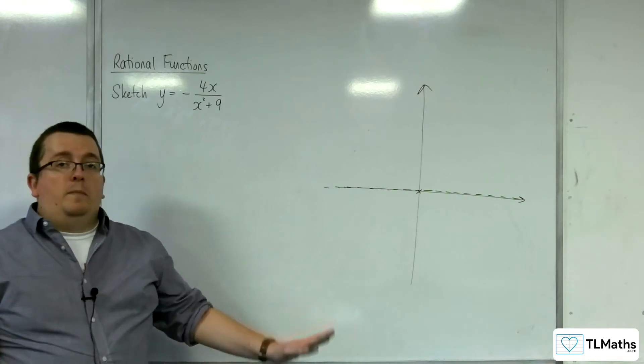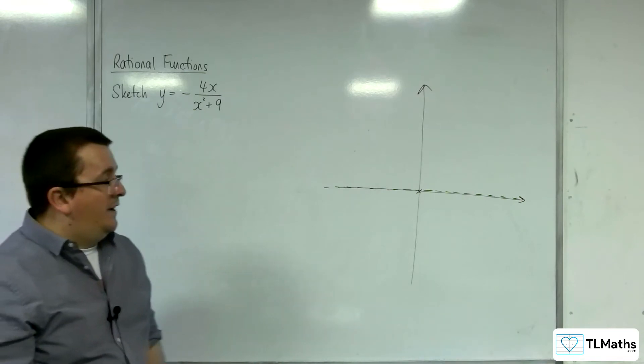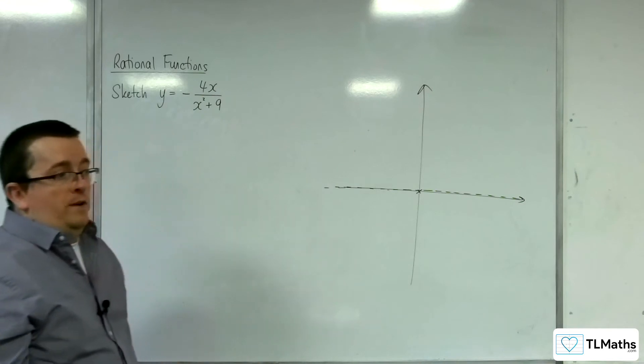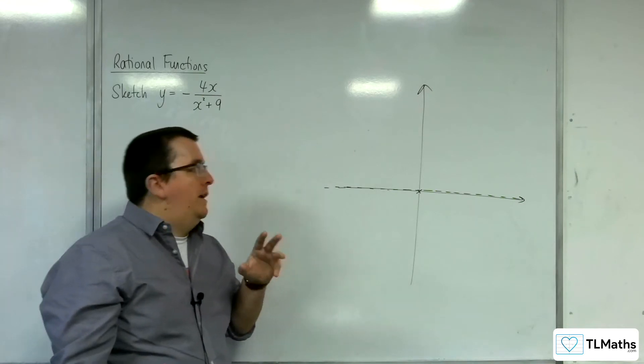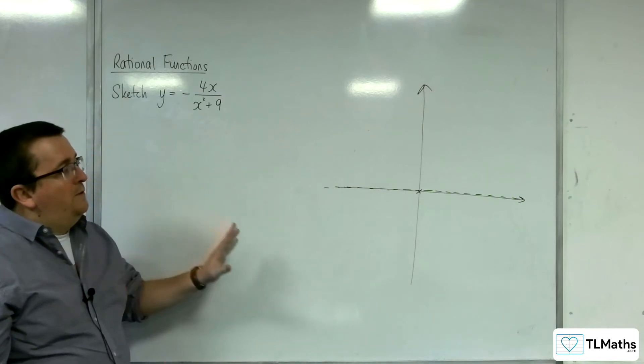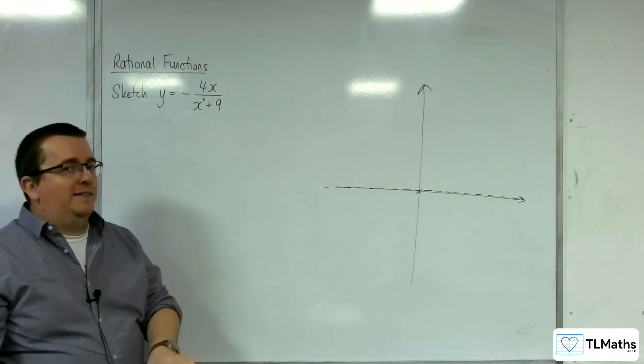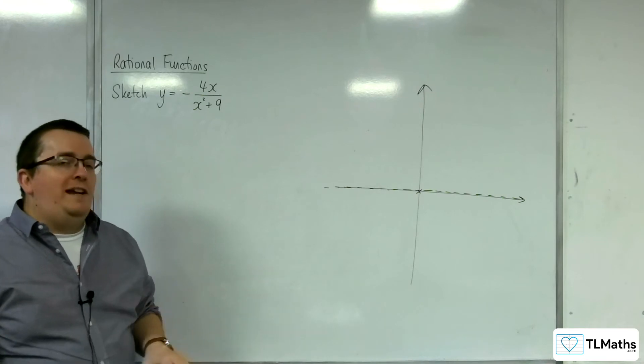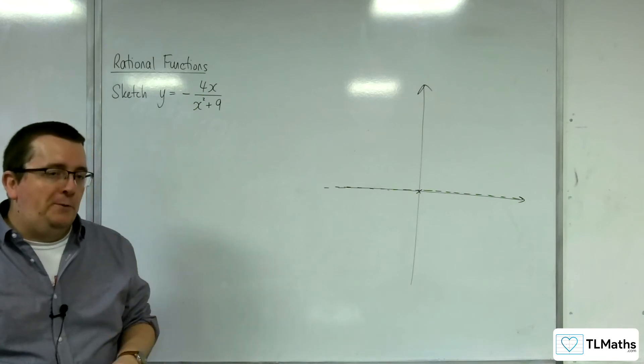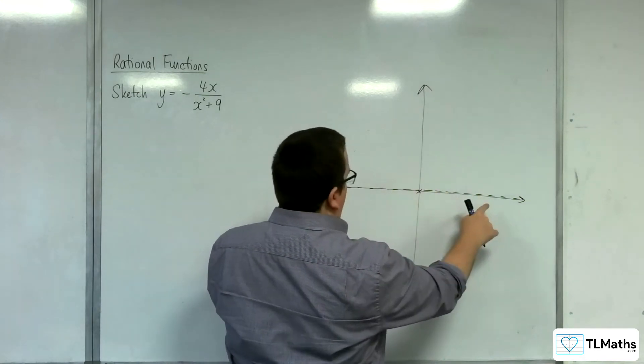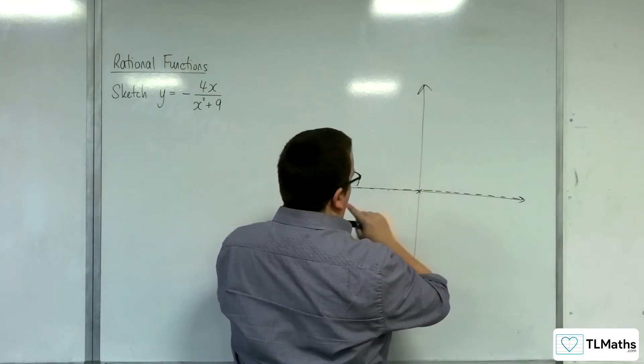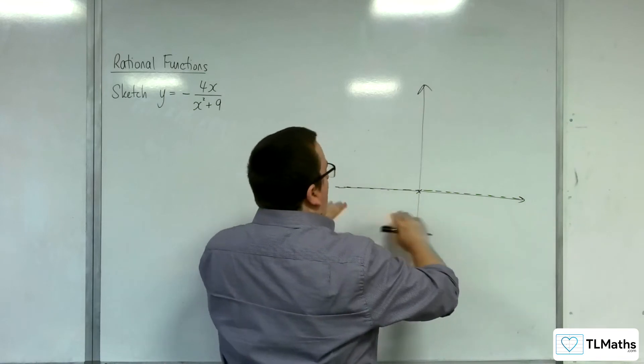So all we know at the moment is it's got to tend to the x-axis and it goes through the origin. So at this point, we don't really know how this is going to look. But there's really only two things that it could do. Remember, it's got to tend to both of these asymptotes, or sorry, to the asymptote from both directions.